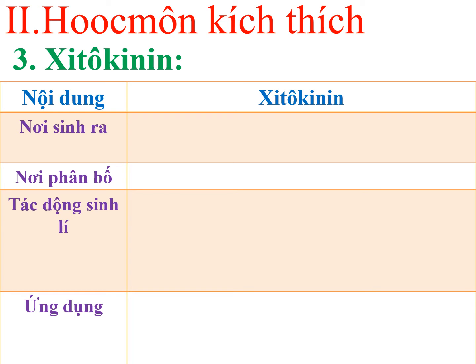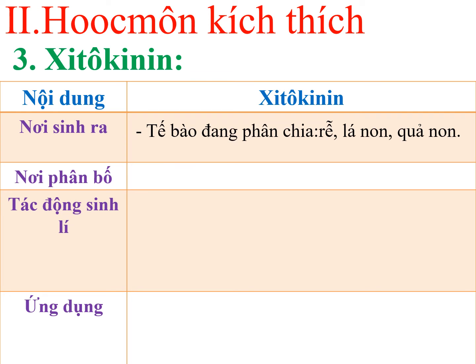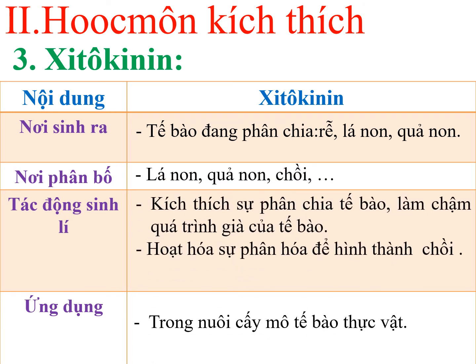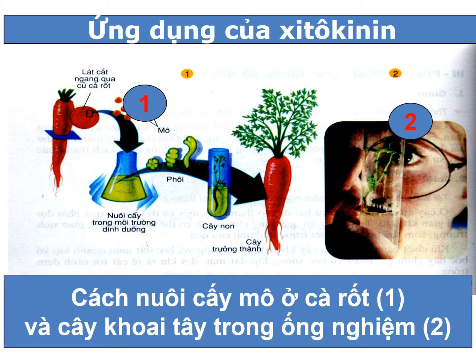Đối với hốc môn cytokinin, các em cần lưu ý: thứ nhất - nơi sinh ra là trong tế bào đang phân chia như rễ, lá non hay quả non; thứ hai - nơi phân bố chủ yếu ở lá non, quả non hay chồi. Tác động sinh lý: kích thích sự phân chia của tế bào, làm chậm quá trình già của tế bào, đồng thời hoạt hóa sự phân hóa để hình thành chồi ở thực vật. Ứng dụng cytokinin chủ yếu trong lĩnh vực nuôi cấy mô tế bào thực vật, ví dụ như ở cà rốt hoặc khoai tây.